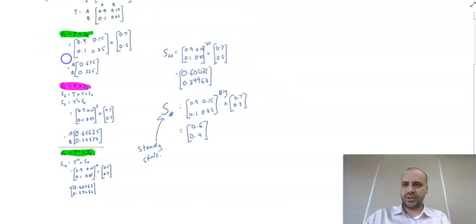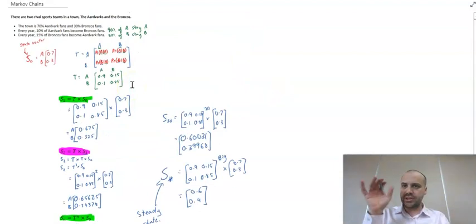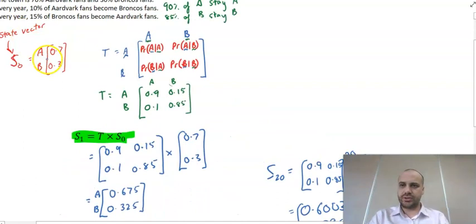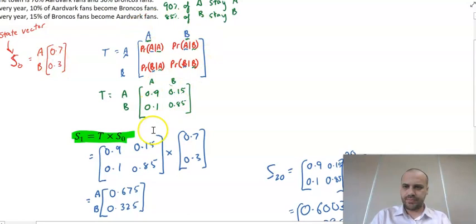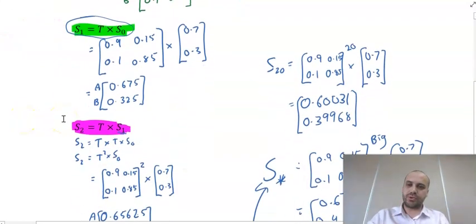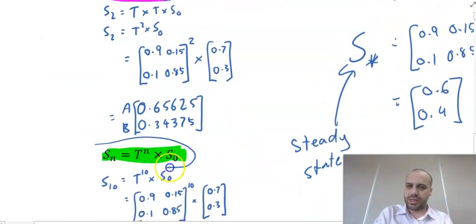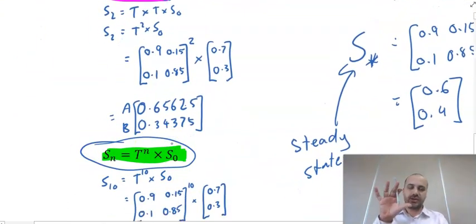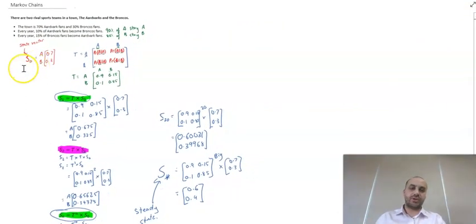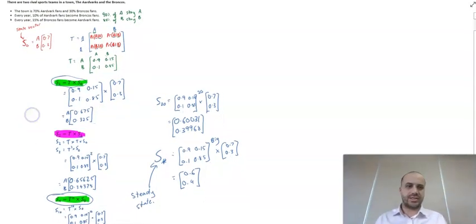That's enough on Markov Chains. Formulas are really important here — you need to understand how to create your initial state vector and how to fill in the transition matrix. The most important formula is SN = T^N × S0: the transition matrix to the power of N times the initial state vector. A follow-up video will go through more example questions.